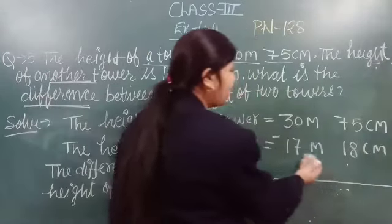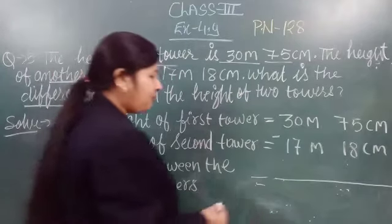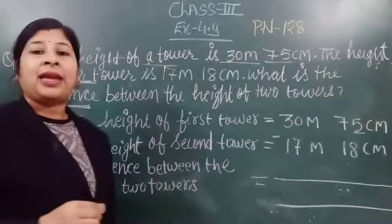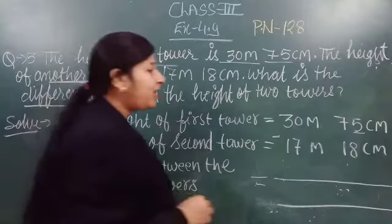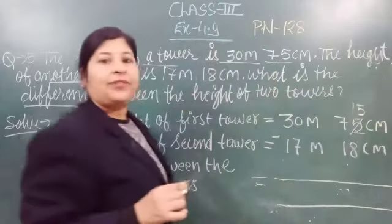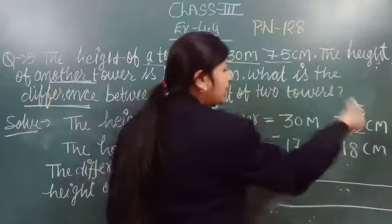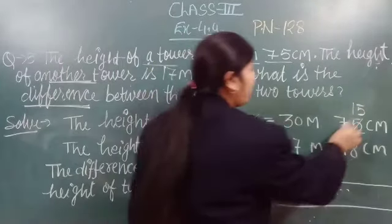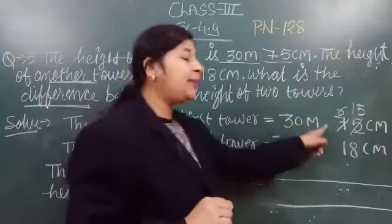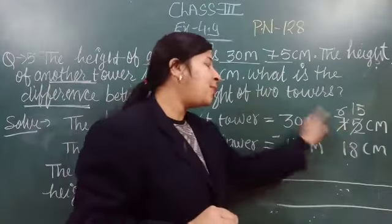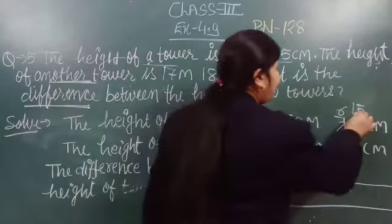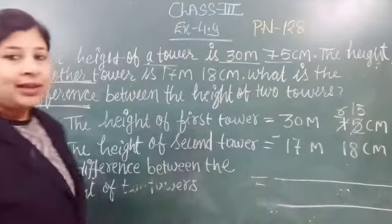तो अब हमें यहाँ पर subtract करना है, यानी minus करना है। पहले हम centimeter वाला करेंगे, उसके बाद meter वाला करेंगे। यहाँ पर five है — five में से eight minus हो सकता है? नहीं हो सकता। तो हम seven से one carry लेंगे, तो यह five हो जाएगा fifteen, और seven में से one कम होने से six बचेगा।